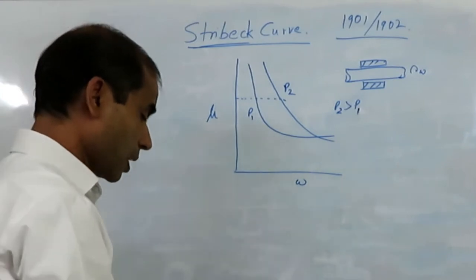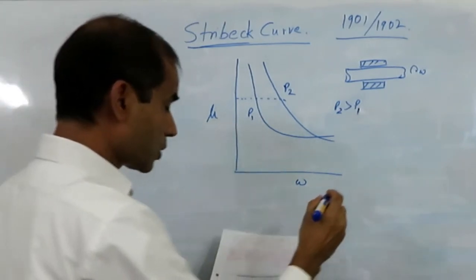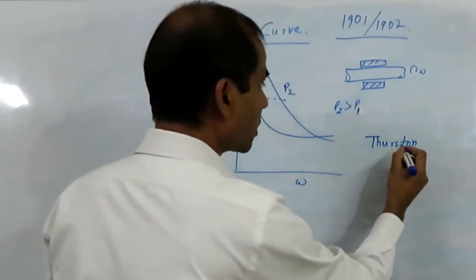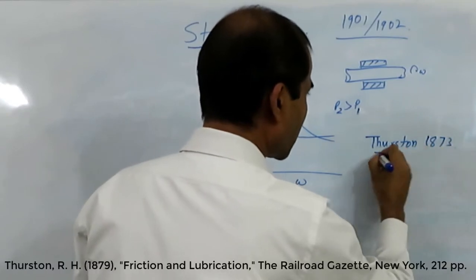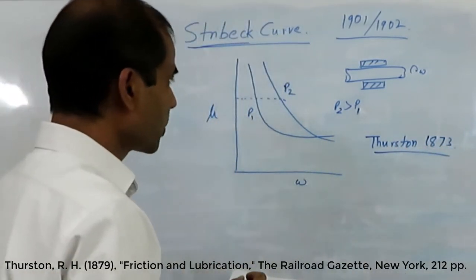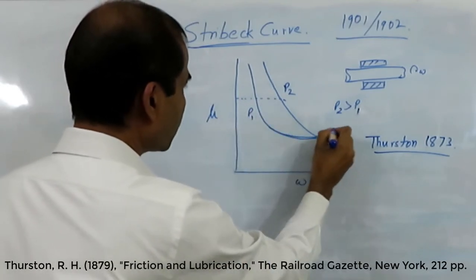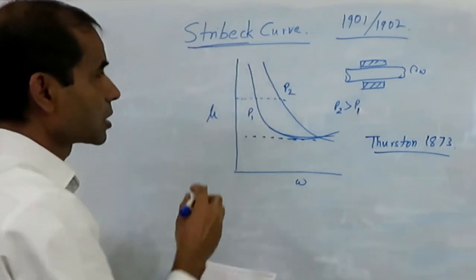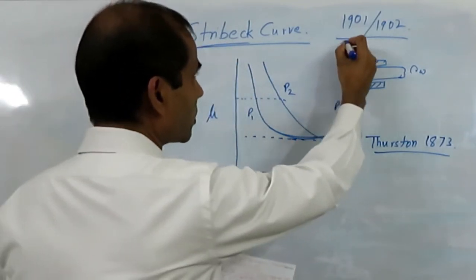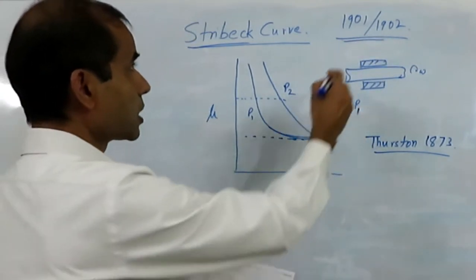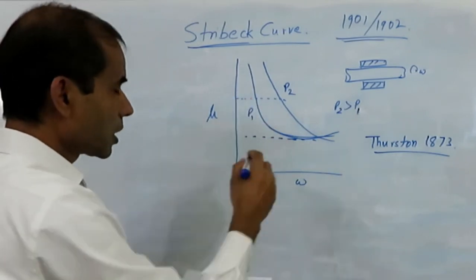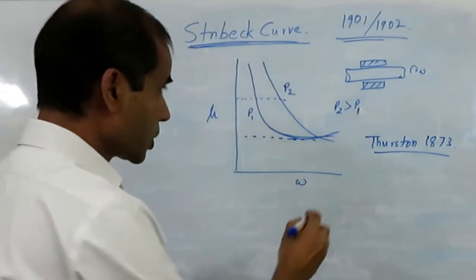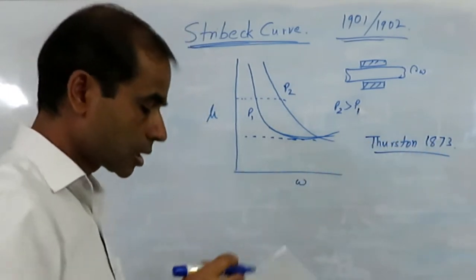This observation was also found by another researcher named Thurston in 1873. This kind of relation between coefficient of friction and speed gives a kind of minimum, and it was found out by Thurston in 1873. But Stribeck's work was more elaborate and got more attention, published in 1901–1902. This kind of curve or diagram is known as the Stribeck curve or Stribeck diagram, though Thurston in 1873 also found a similar relationship.